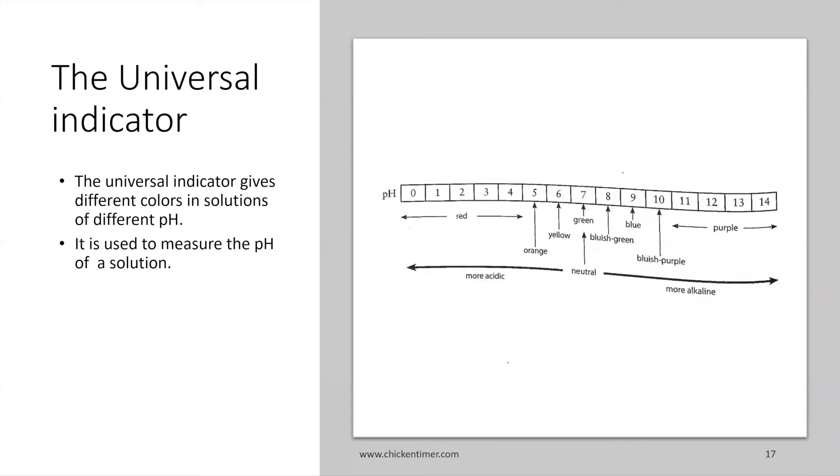Universal indicator also comes in pH 0 to 14. It will give off different colors when it's in different pH. The diagram here shows what color they have at a certain pH value. For example, from pH 0 to 4 it will be red color.